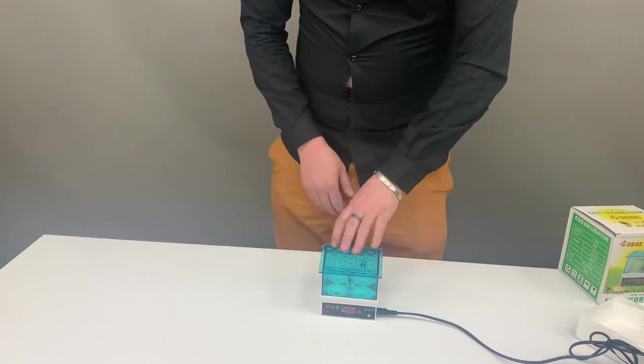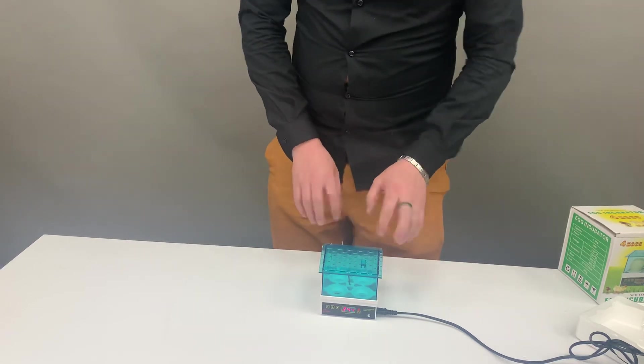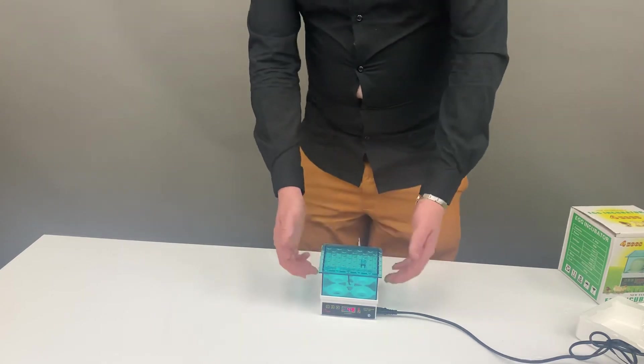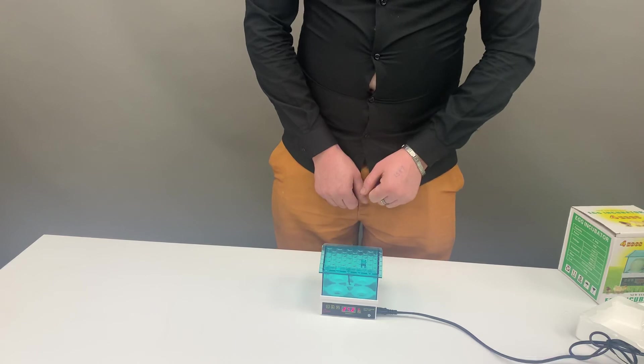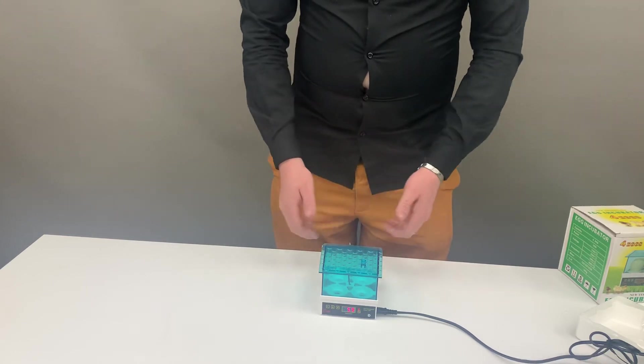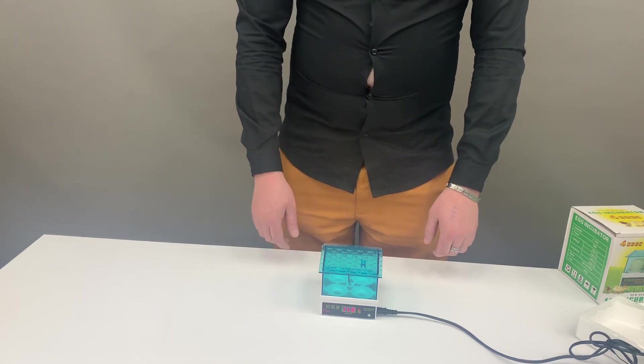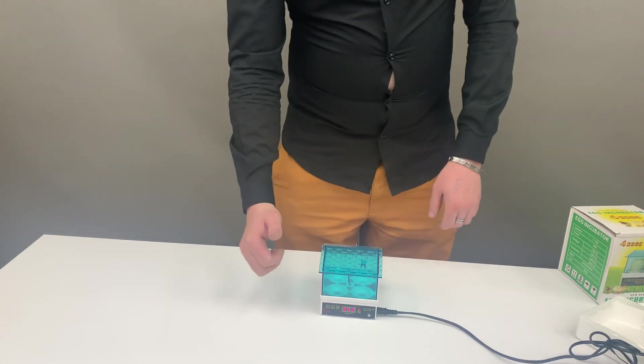When it comes to day 18, don't change the eggs or move them, just leave them and check your water. Then on day 21 your chicks are hatching. The 4-egg incubator is suitable for chicken and quail eggs. Don't forget to like and subscribe to this video.